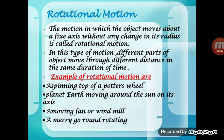Rotational motion is the motion in which an object moves about a fixed axis without any change in its radius. It has a fixed point and keeps rotating. In this type of motion, different parts of an object move through different distances in the same duration of time. Examples are a spinning top, a potter's wheel, planet Earth rotating on its axis, a moving fan, a windmill, and a merry-go-round.